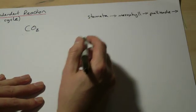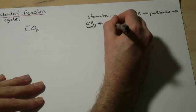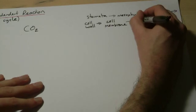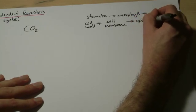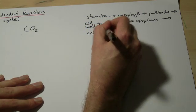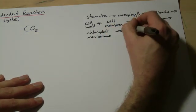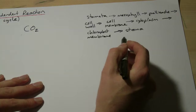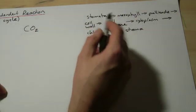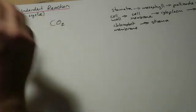it then has to diffuse through the cellulose cell wall, through the cell membrane of the palisade cells, into the cytoplasm, through the chloroplast envelope — or the chloroplast membrane — remembering this is a double membrane structure. And finally into the stroma. So it's quite a long pathway, worth remembering all these different layers that CO₂ has to diffuse through before it gets into the stroma, where the Calvin cycle occurs.